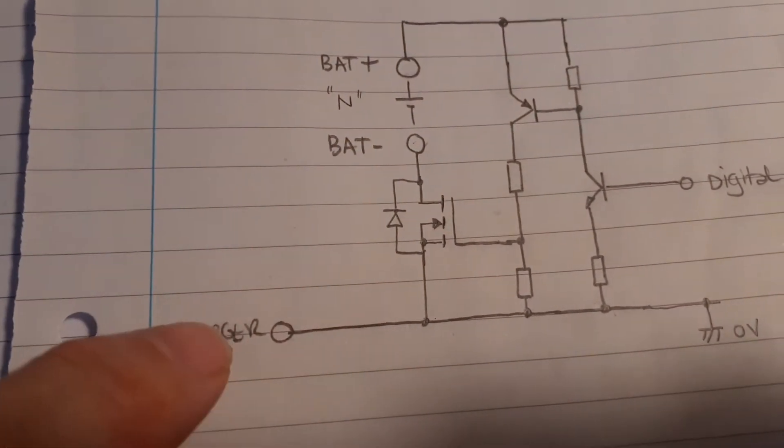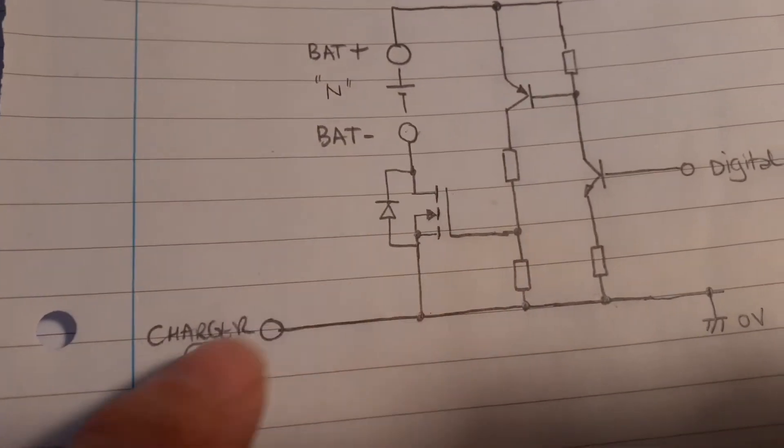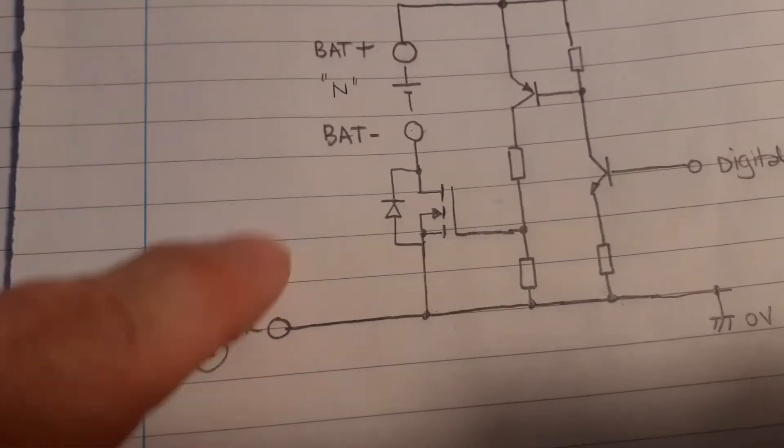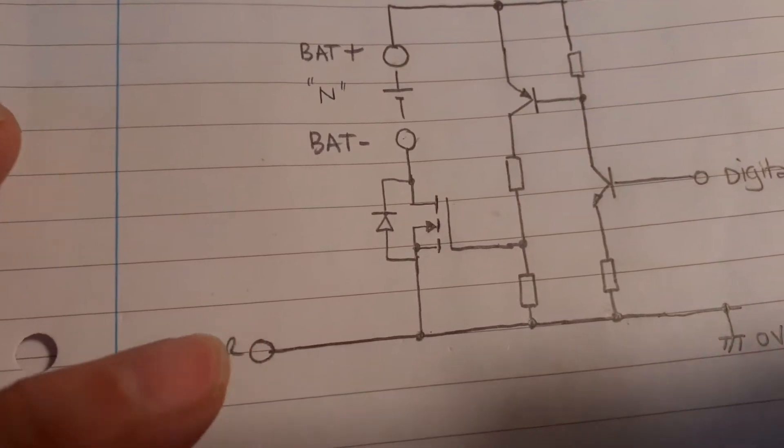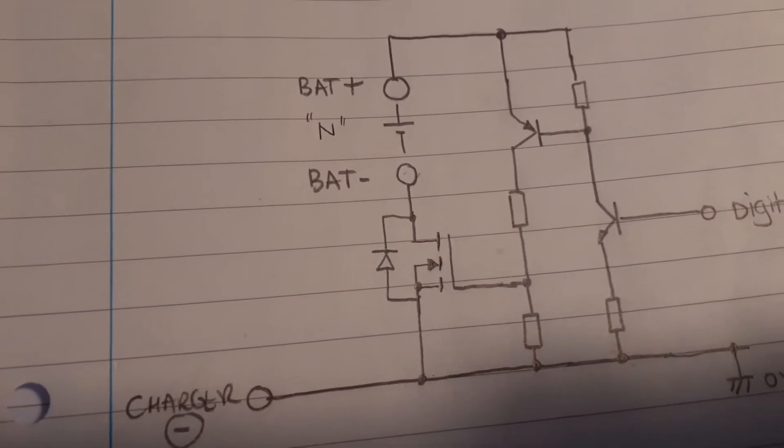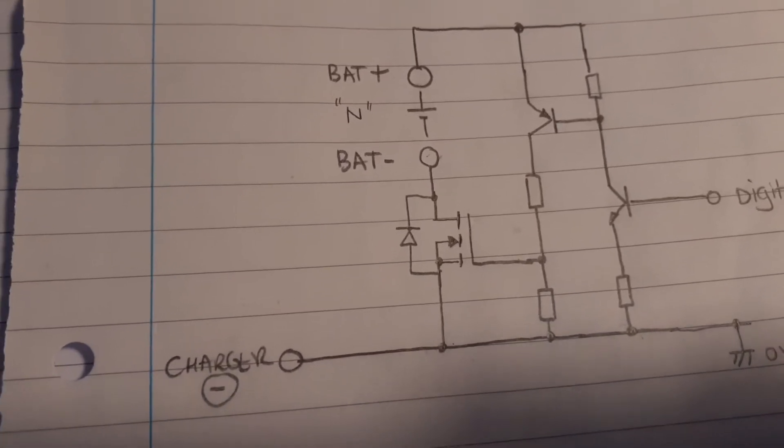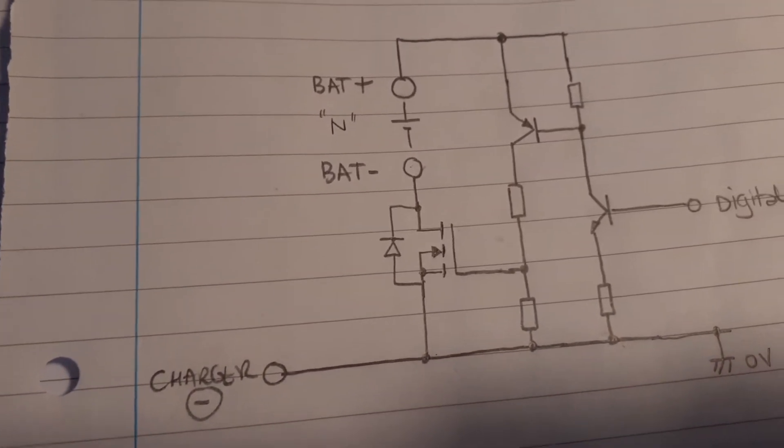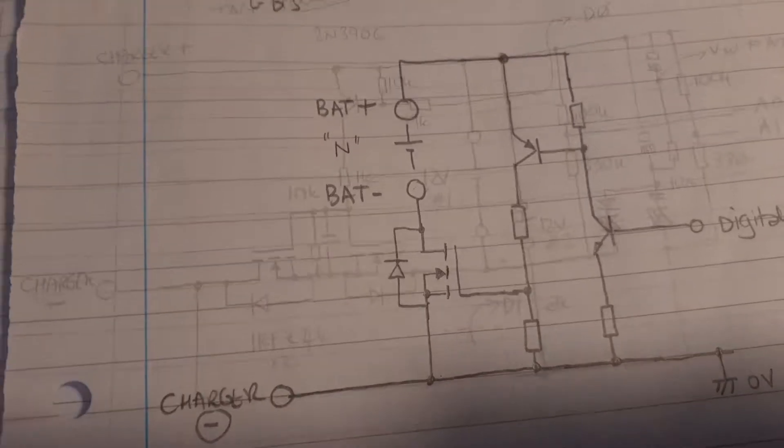But it also meant that with the MOSFET switched off, the charger was actually seeing the voltage from the battery to a certain extent, but then when it connected and started charging, it couldn't actually pass any current. So it was going into this battery's broken mode, which wasn't really what I wanted to do.